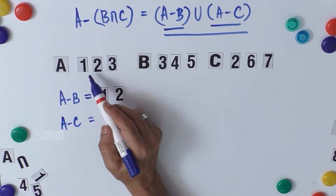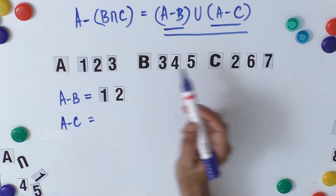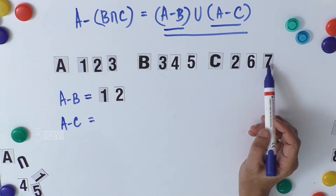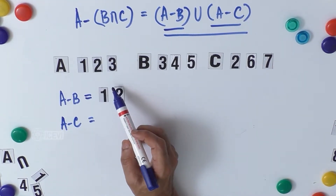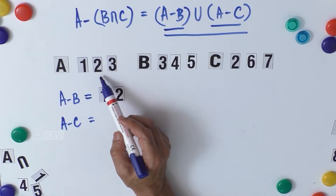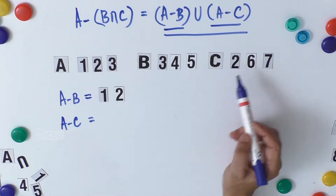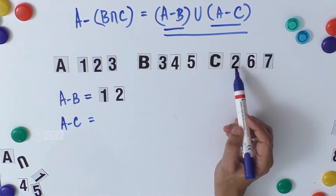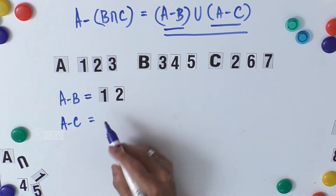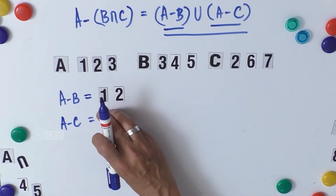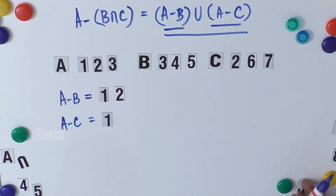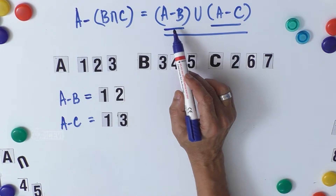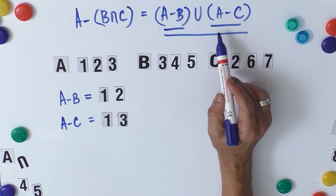Now let us take A minus C. Set A has 1, 2, 3 and set C has 2, 6, 7. A minus C is the objects in A which are not found in C. 2 is found in C, but 1 and 3 are not, so A minus C becomes {1, 3}.